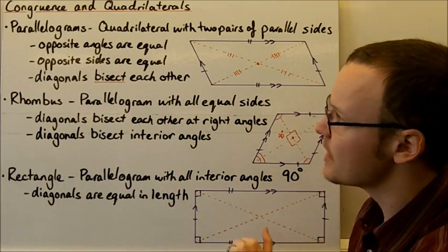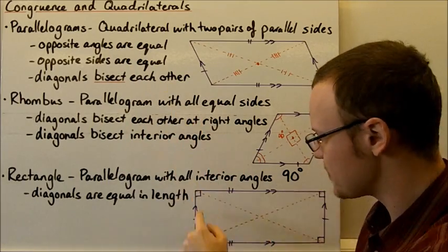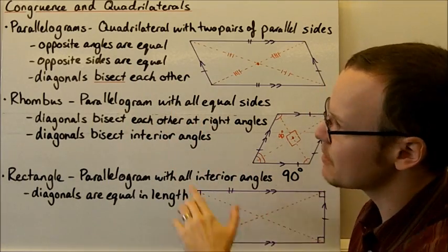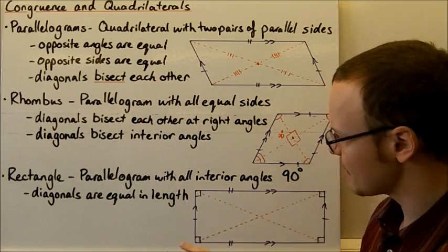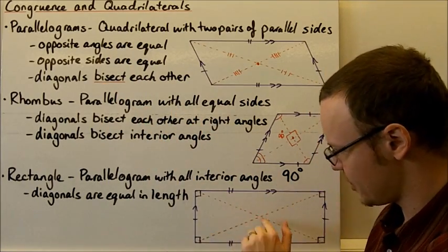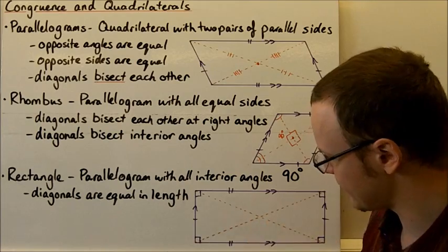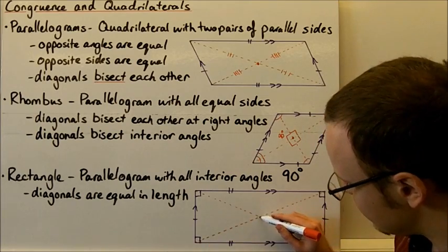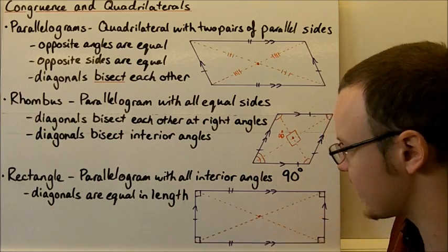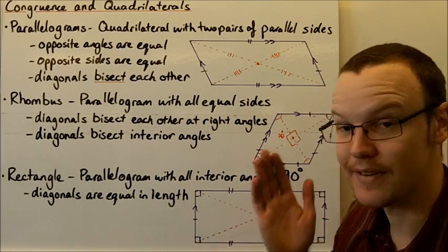And of course, all the opposite angles are equal, the opposite sides are equal, and the diagonals bisect each other — they cut right in the middle, cutting each diagonal in half evenly.